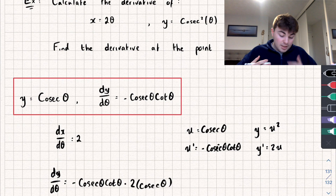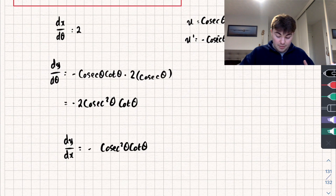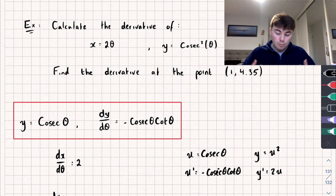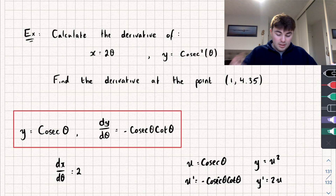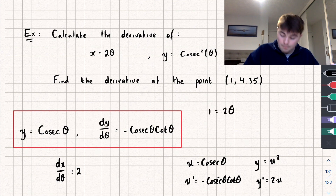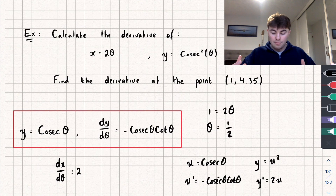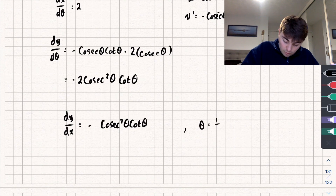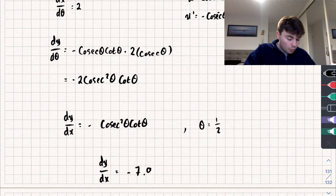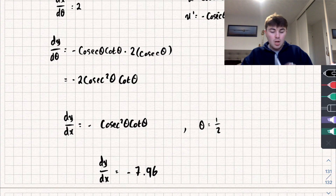Now let's find the derivative at the point x equals 1, y equals 4.35. Our derivative is in terms of θ, so we substitute x equals 1 into x equals 2θ, giving 1 equals 2θ, so θ equals one half. Substituting θ equals one half into our derivative gives dy/dx equals negative 7.96, to two decimal places. Hopefully this video was useful — if it was, like, subscribe and share, and go over to my channel for tons more maths tutorials. Thanks for watching.